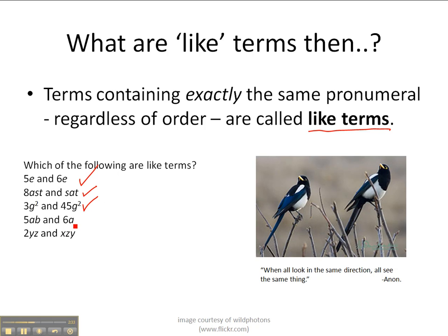5ab and 6a. Again, these ones have got different coefficients, the 5 and 6 are different. This one on the left has got ab, this one on the right has got a only. Now these are not exactly the same pronumerals. The a is the same, but this one has b and this one doesn't. Therefore this is not a like term.